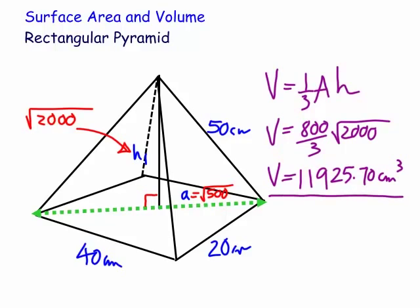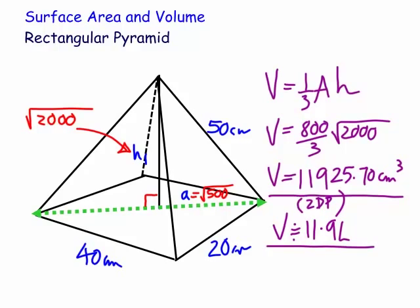The capacity is about 11.9 liters — capacity approximately 11.9 liters. The volume is written to two decimal places, and we've rounded our liters to the nearest 100 milliliters. Thank you for watching, and we'll try some more in a while. Bye for now.